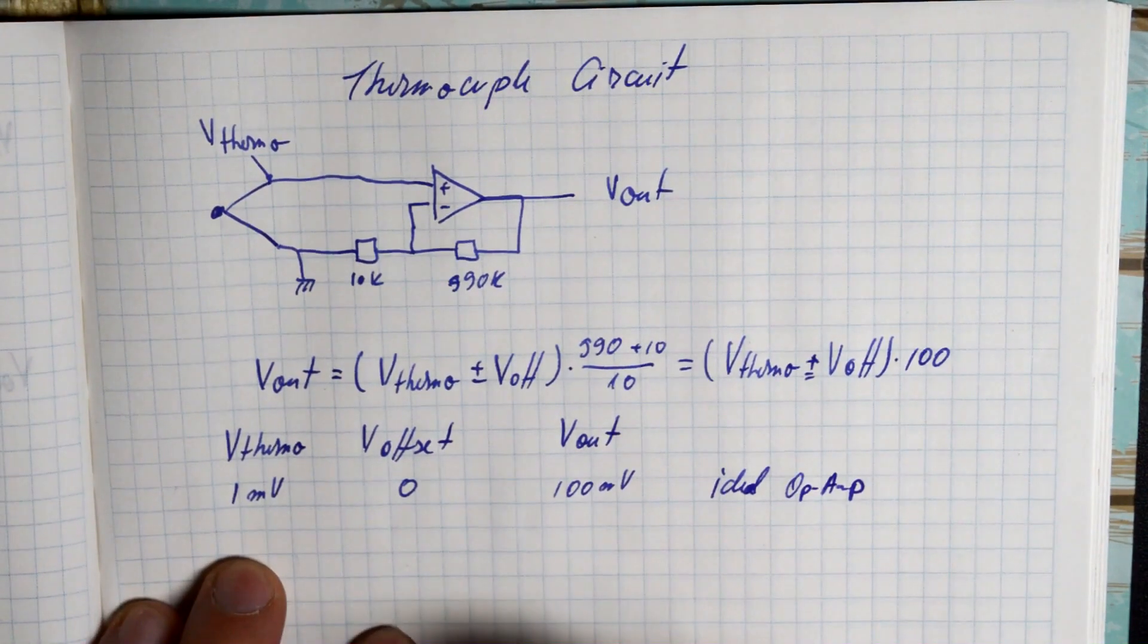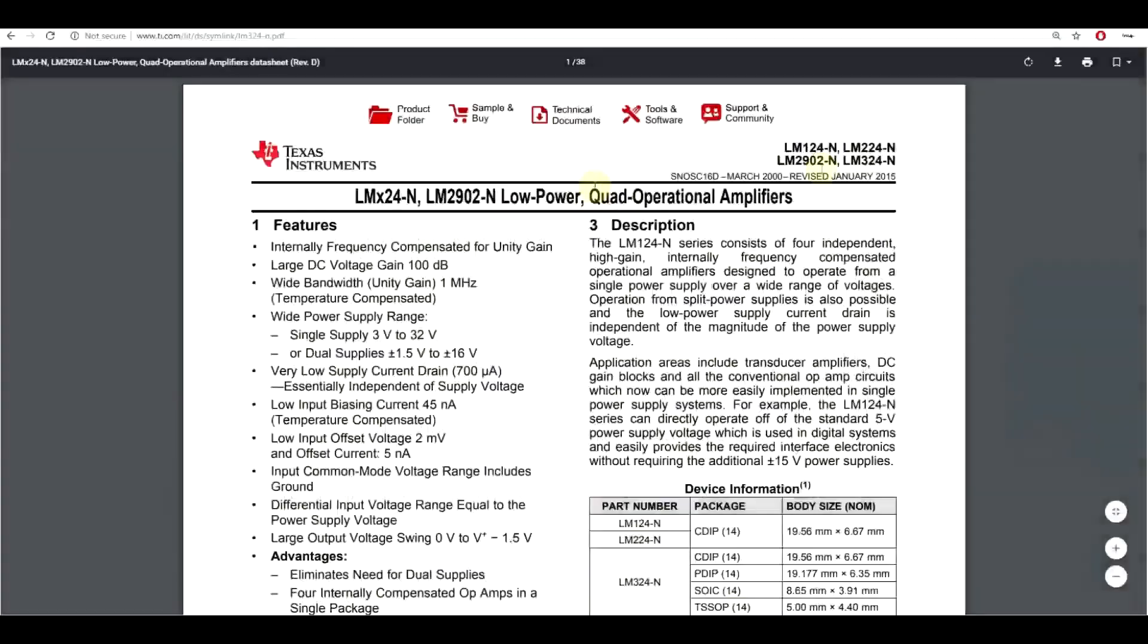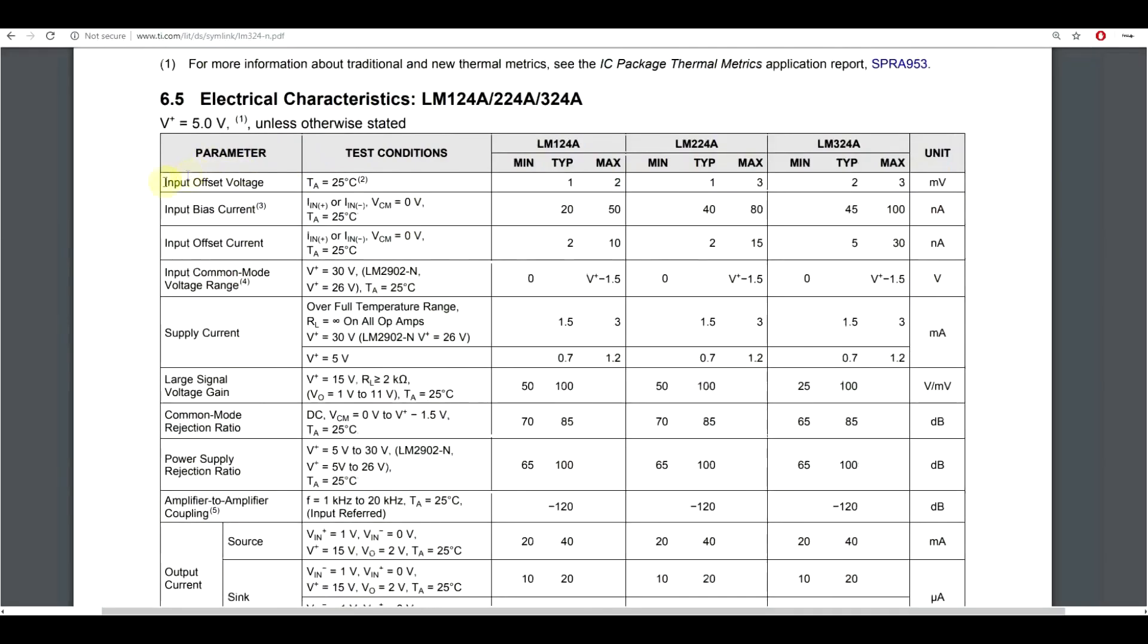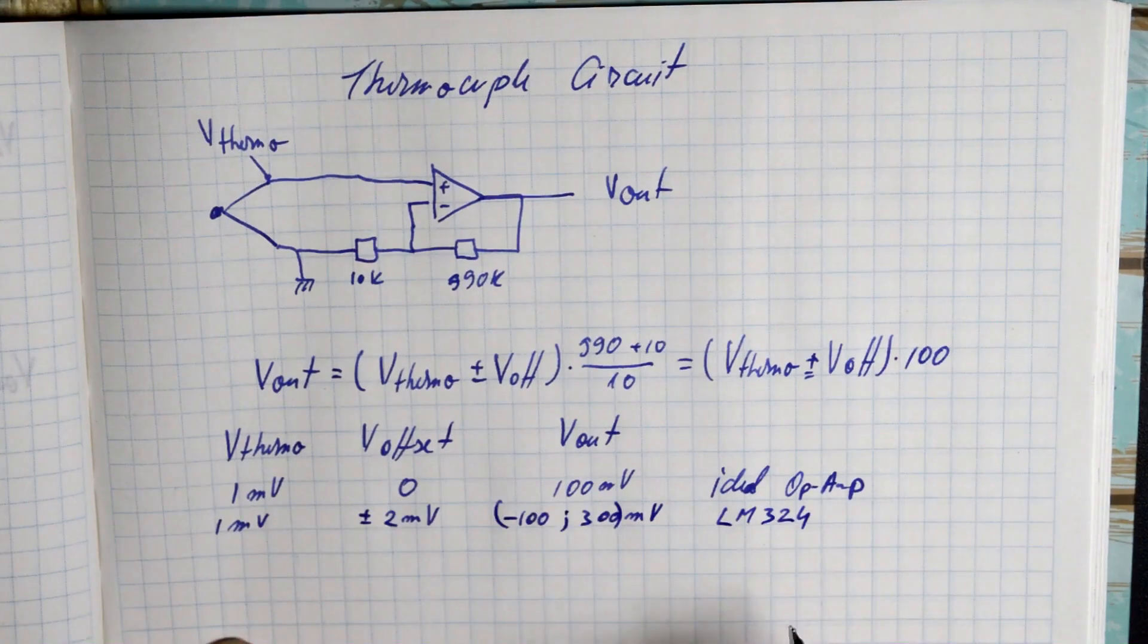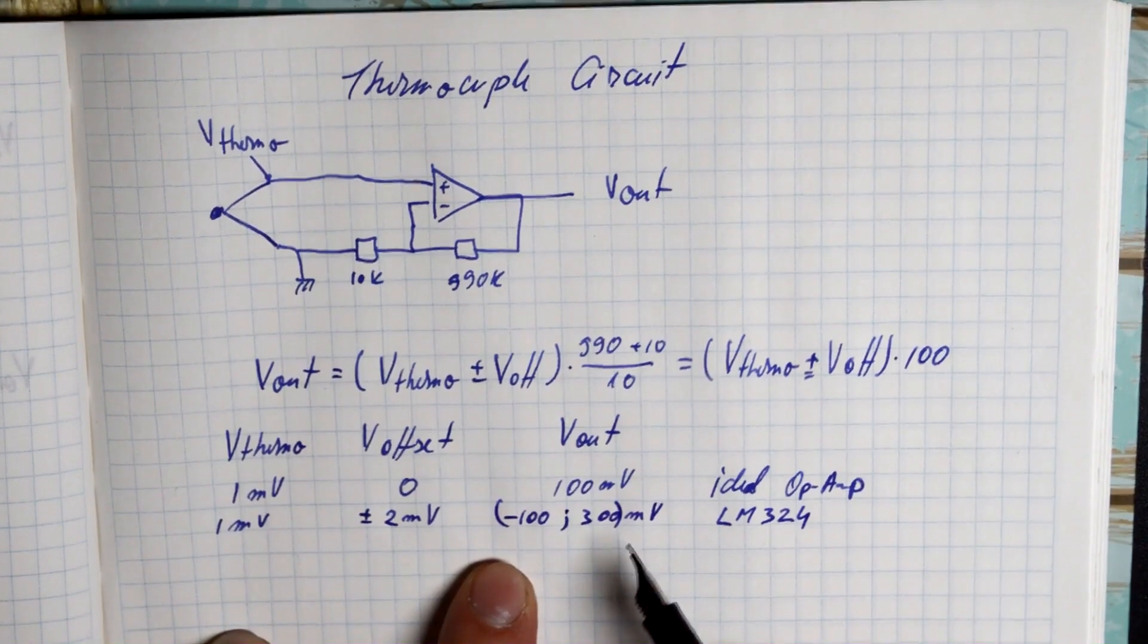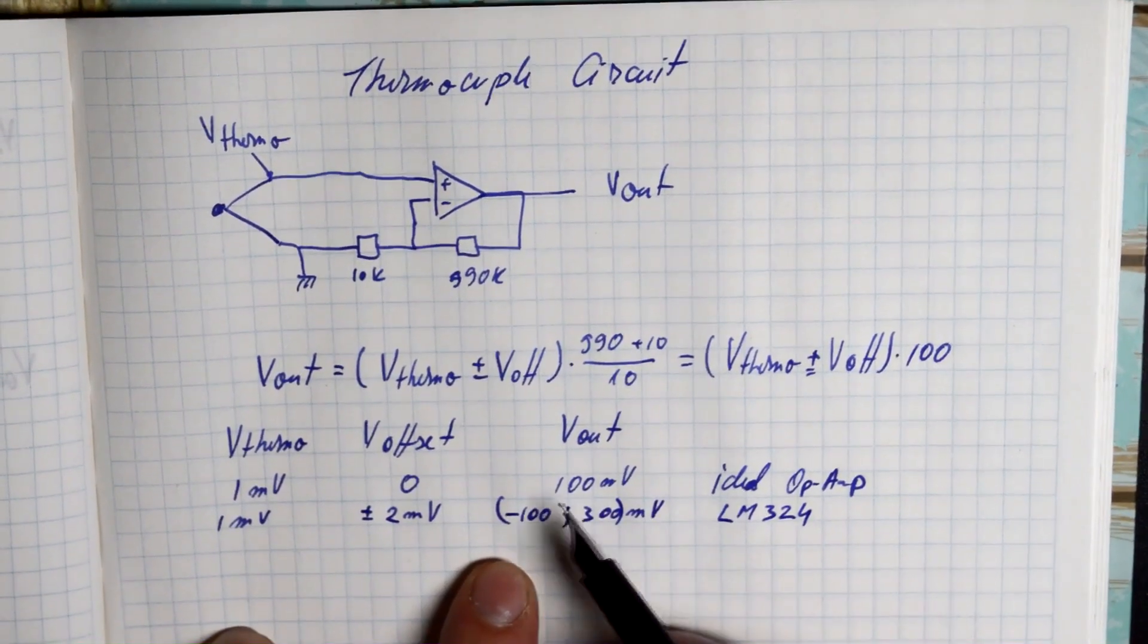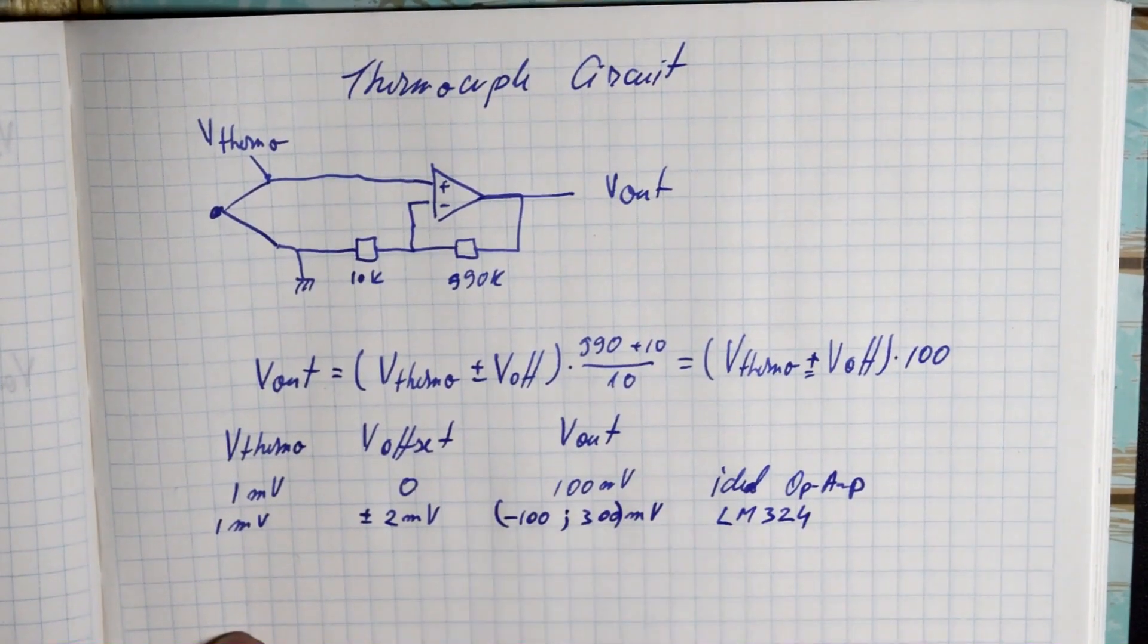Now let's try a common amplifier, like the LM324. If we look in the datasheet, we will find that this IC has a typical input offset of around 2 millivolts. So let's go back to our calculation to see what sort of output voltage will this op-amp give us. Well, we will get something between minus 100 and 300 millivolts. Now that's not very useful, now is it, compared to what we should be getting, which is 100 millivolts.